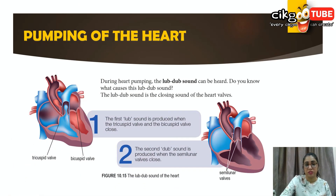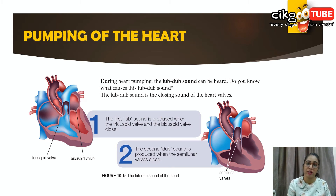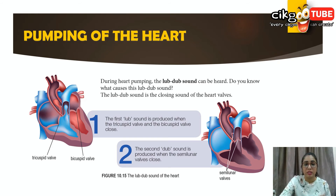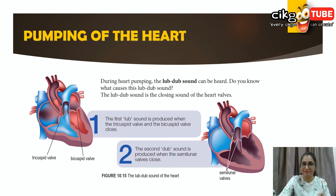During heart pumping, a lub-dub sound can be heard. This sound is produced by the opening and closing of the heart valves. The first 'lub' sound is produced when the tricuspid valve and the bicuspid valve close together, allowing blood to flow from the atrium to the ventricle. The second 'dub' sound is produced when the semilunar valve closes. So: first 'lub' = bicuspid and tricuspid valves; second 'dub' = semilunar valve.